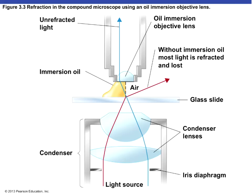Looking at this diagram, the purpose of the oil is to keep light coming from our light source from being refracted into the atmosphere. The light goes through the oil instead, and because our objective is touching the oil with no air in between, it allows unrefracted light to illuminate our subject and be transmitted through the objective lens and eyepiece, giving us greater resolution.